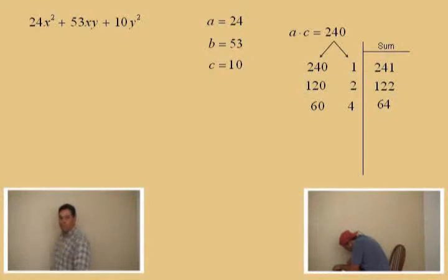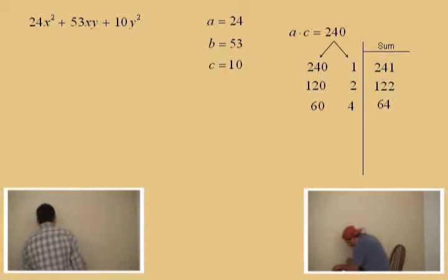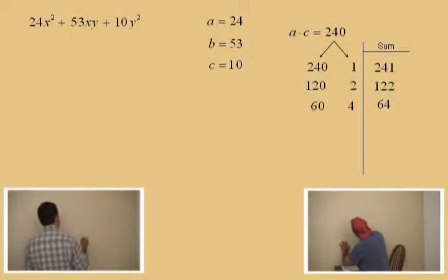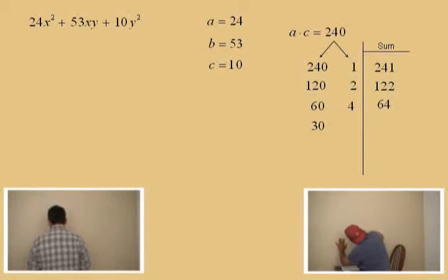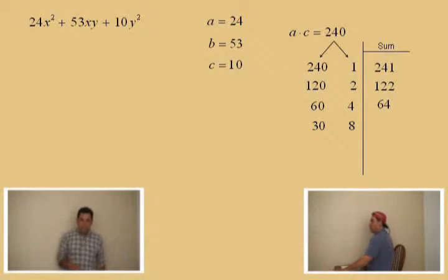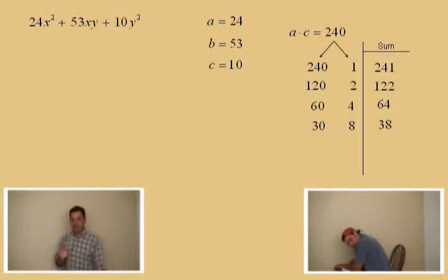We still haven't found that B term yet, have we? Remember, our B term is 53. Now, Charlie, what's half of 60? 30. That's right. Now, 4. Double that, you get a what? 8. Now, what do those sum to? 38. We're still not there. It's okay. Just relax. Don't get scared. Just keep going.